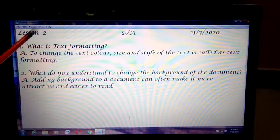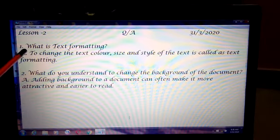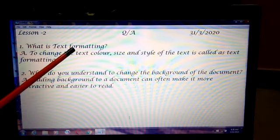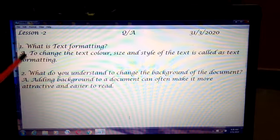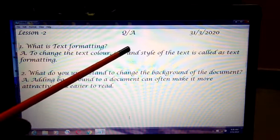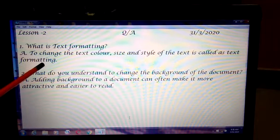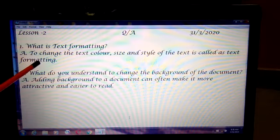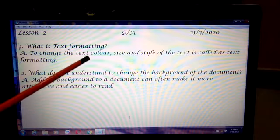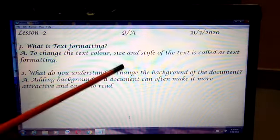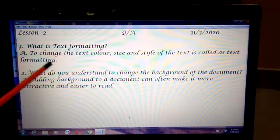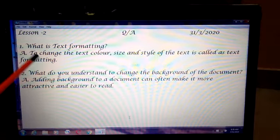See here. Lesson two. Question and answers. The first question: what is text formatting? Text formatting means to change the text color, size and style of the text is called as text formatting. Here formatting means to change the appearance of text. How we are changing - like color, size and styles. By using three ways we are changing the text. Make it down.